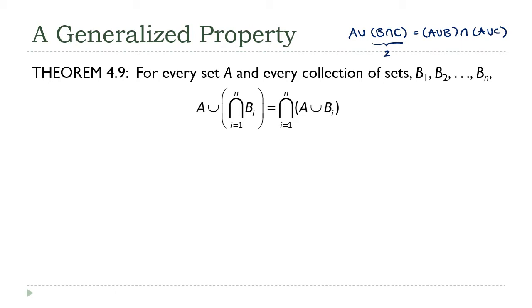The method we're going to use here is exactly what we've been doing before. We're going to show the set on the left is a subset of the set on the right, and the set on the right is a subset of the set on the left. Therefore, they must be equal. So first we're going to show A union the intersection is a subset of the intersection of the unions.